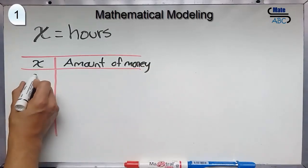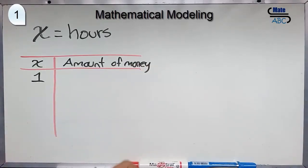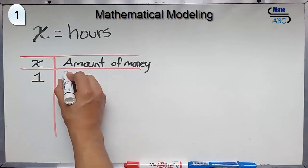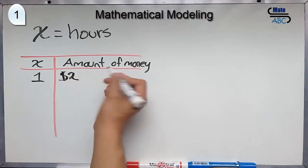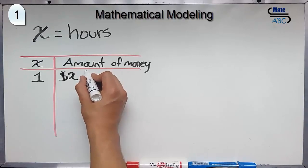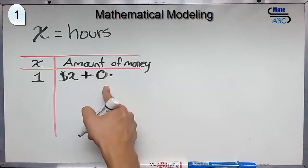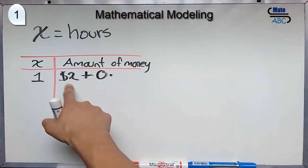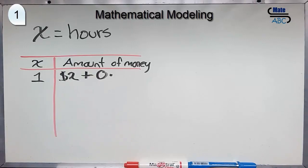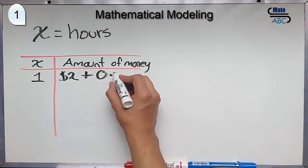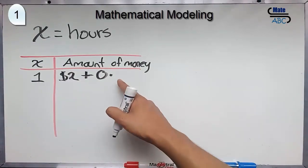In the first hour, you will be charged $2. But, you have to add a zero. Zero plus any amount will be this amount by the neutral property of the addition. I will explain this later.